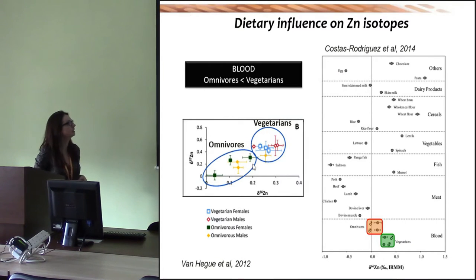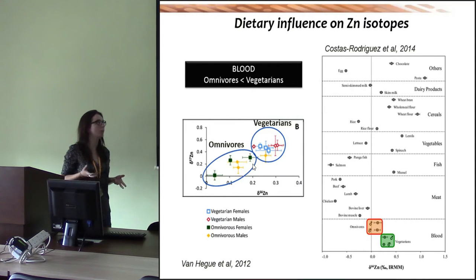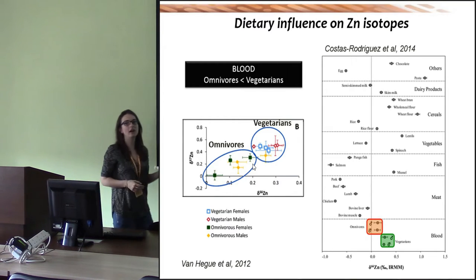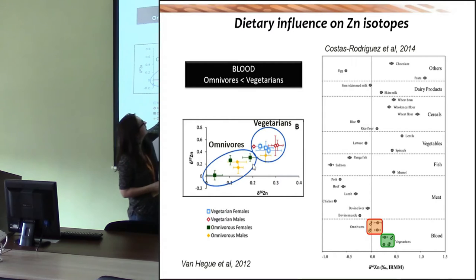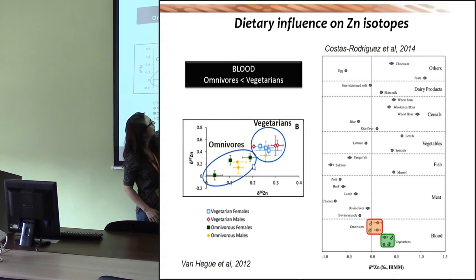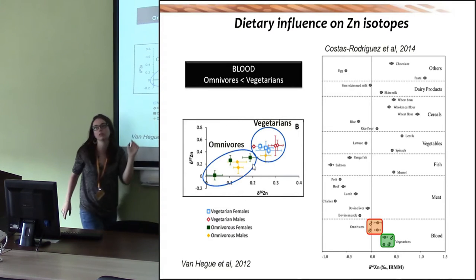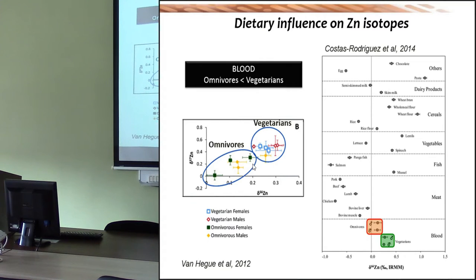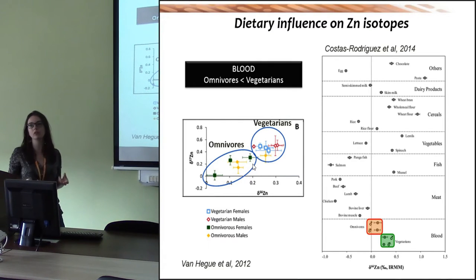The first evidence that there is a relationship between the zinc isotope composition of the body of animals and humans and the diet was demonstrated by a team from Belgium, from the University of Kent. They analyzed human blood from vegetarians and omnivores and showed that for vegetarians the zinc isotope composition was higher than for omnivores. Later, this team showed with more examples that this trend is actually systematic.